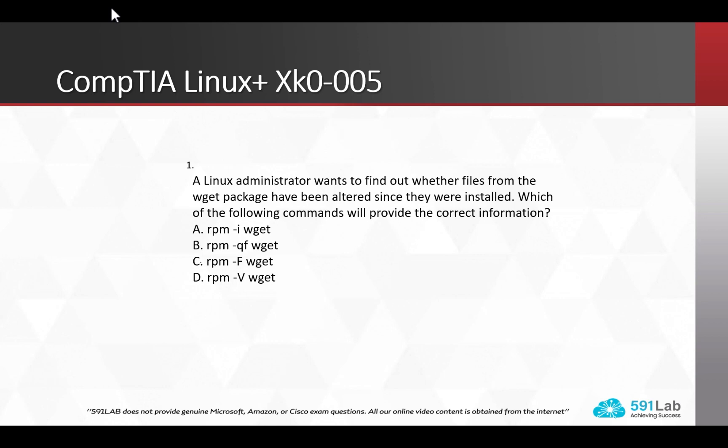Our first question: a Linux administrator wants to find out whether files from the wget package have been altered since they were installed. Which of the following commands will provide the correct information? We have four available options. The correct answer is D — we would use the rpm command with a hyphen capital V option, then specify the name of the package.